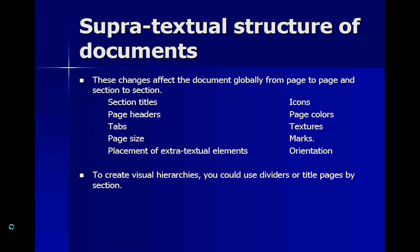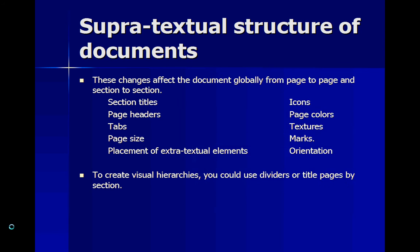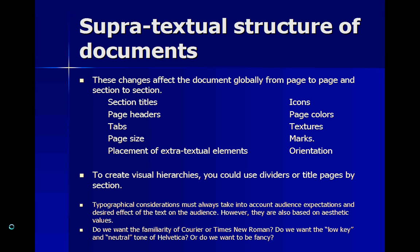The author suggests that to create visual hierarchies, you could use dividers or title pages by section, and shows an example with headers separating different sections of a document. Another consideration in supertextual structure is typography, which must always be taken into account in the context of audience and the desired effect of the text. Of course, personal aesthetics also play a role — do you want the familiarity of Times New Roman, the neutral tone of Helvetica, or something fancy like Old English?